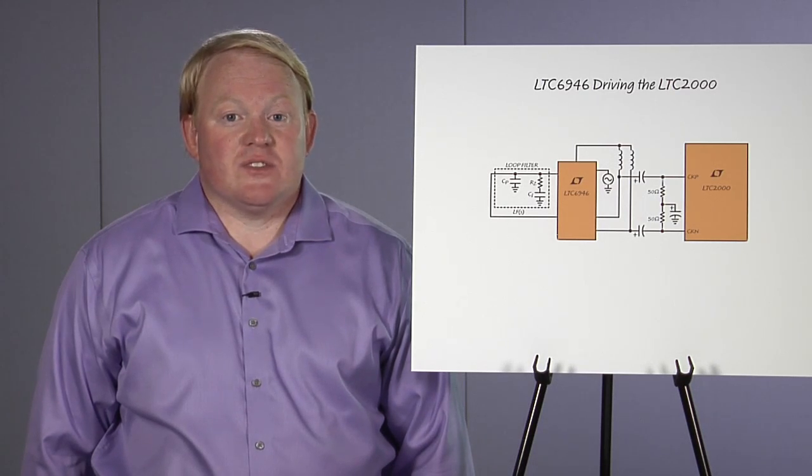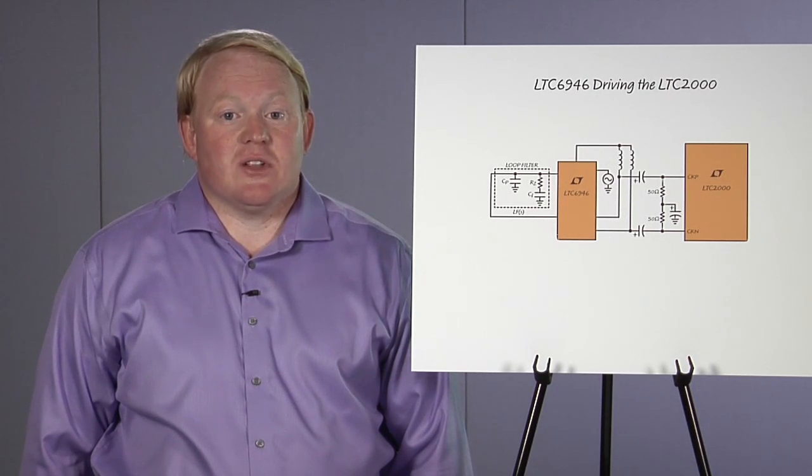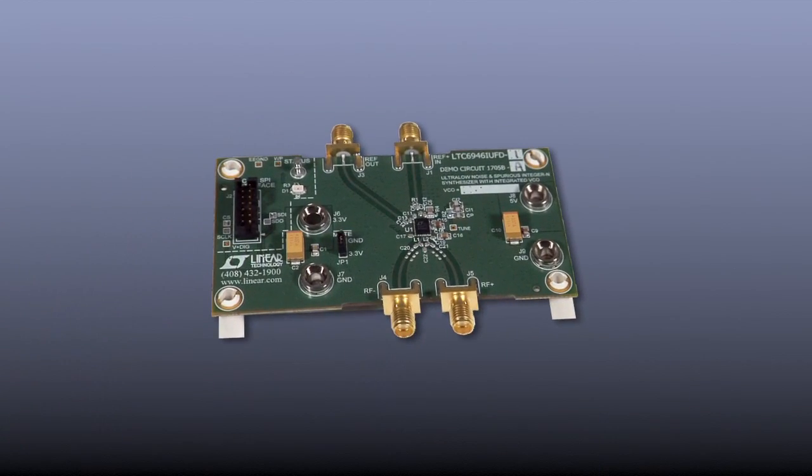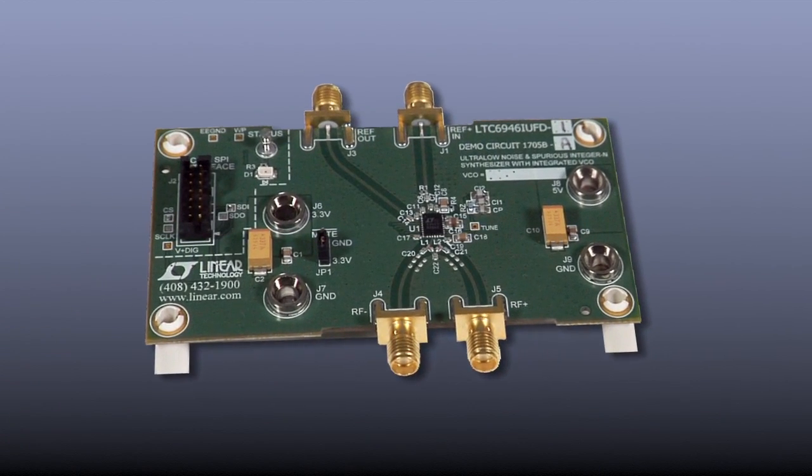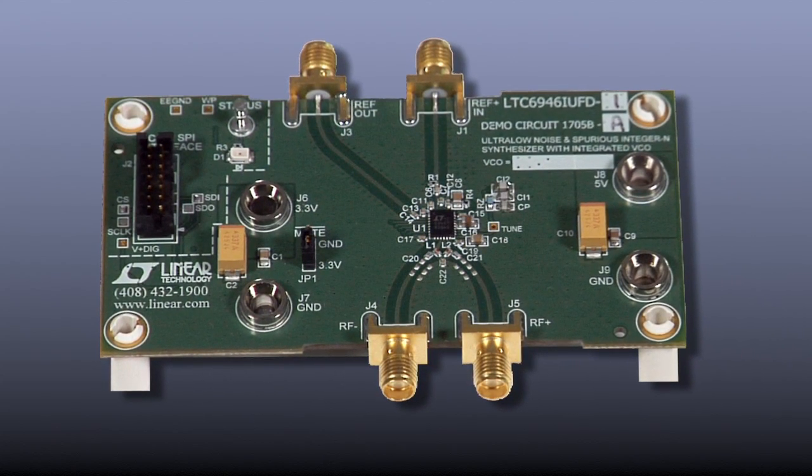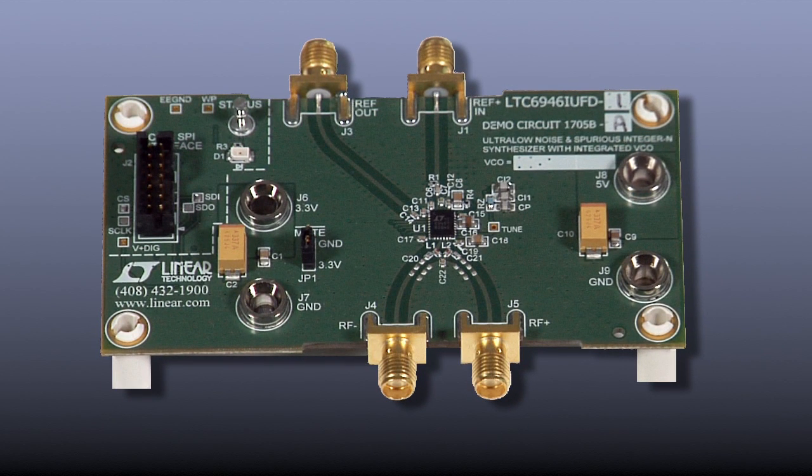Linear technology offers the LTC6946, a high-frequency synthesizer that provides a clean, flexible clock solution for the LTC2000. The LTC6946 can produce signals from 370 megahertz up to 5.7 gigahertz without an external VCO. It has excellent phase noise performance and very low spurious content, making it ideal candidate to clock the LTC2000.